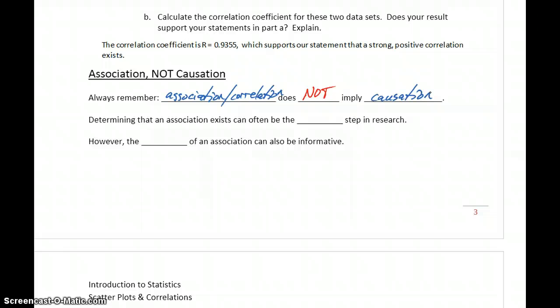Determining that an association exists can often be the first step in some larger research project. You find that there's an association, then you could set up an experiment with controlled variables and try to determine if that relationship is actually cause and effect. But the association itself isn't enough to tell us that.